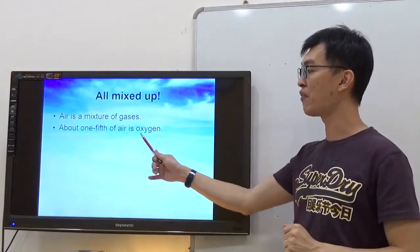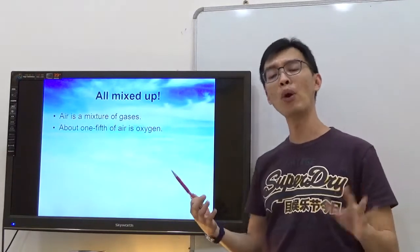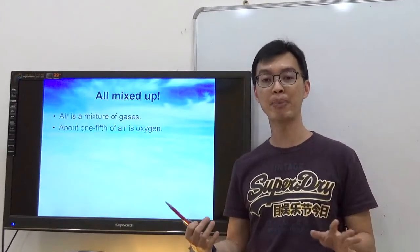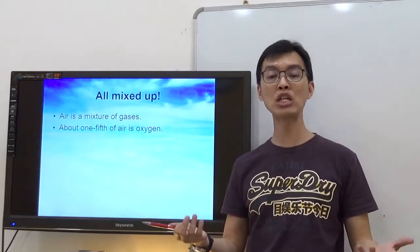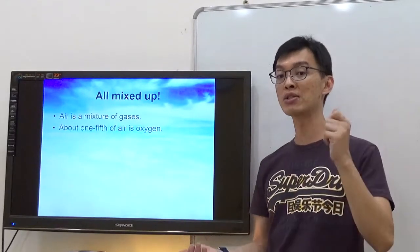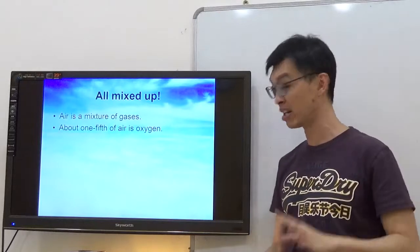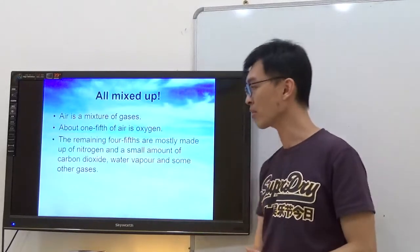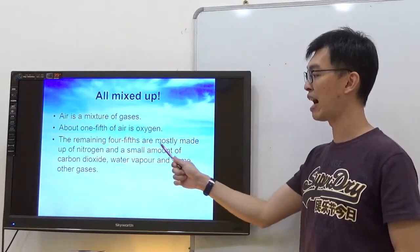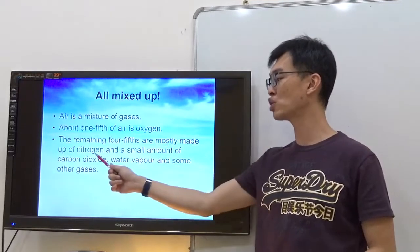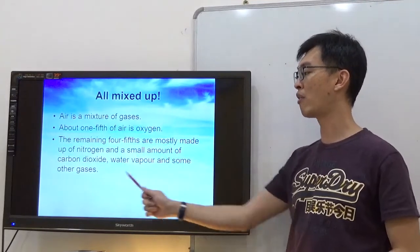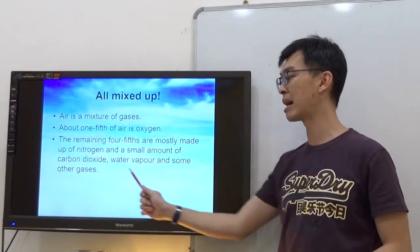About one-fifth of air is oxygen. Now one-fifth is about 20%. You will be learning percentage later part of the year for mathematics. So 20%, just bear that in mind. The remaining four-fifths are mostly made up of nitrogen and a small amount of carbon dioxide, water vapor and some other gases.